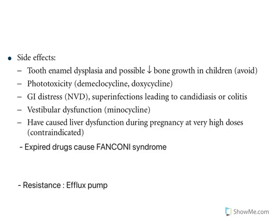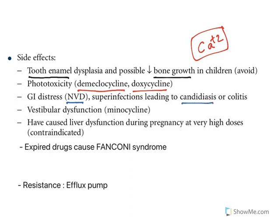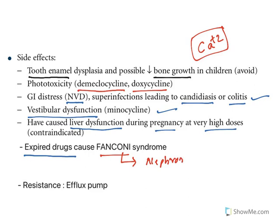The side effects of tetracyclines: because they chelate with calcium, tooth enamel and bone growth can be affected — both contain calcium. Repeated use may cause calcium-related problems. Phototoxicity is seen with demeclocycline and doxycycline. GI distress like nausea, vomiting, and diarrhea, and superinfection leading to candidiasis are also seen. Vestibular dysfunction is observed with minocycline, and liver dysfunction may occur during pregnancy at high doses. Importantly, expired tetracyclines may cause Fanconi syndrome — nephron damage — which shows as many renal problems. The major resistance pattern is via efflux pump, which sends tetracyclines out of the bacterial cell, rendering the drug ineffective.